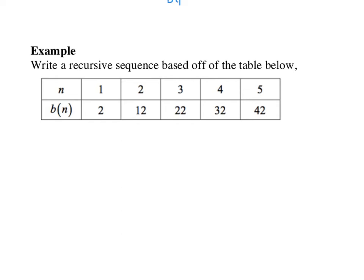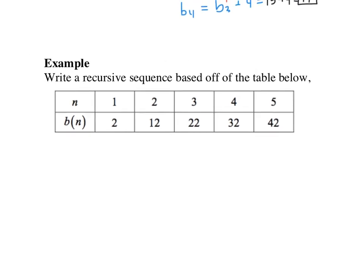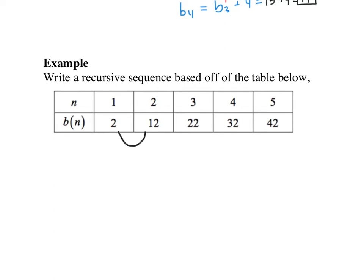So here comes our next level example. We want to write a recursive sequence based off the table of values below. Again, the first thing we care about is is our sequence arithmetic or geometric. When I go from 2 to 12, what do I increase by? I increase by plus 10. When I go from 12 to 22, what do I go up by? It's another plus 10. 22 to 32, another 10. And last but not least, I add by a 10 again.